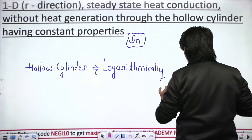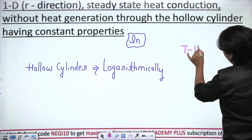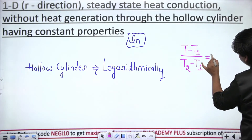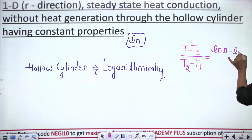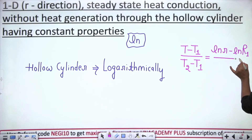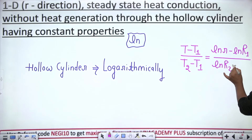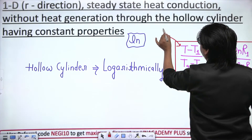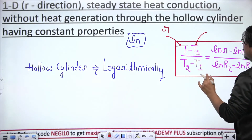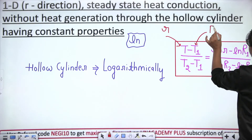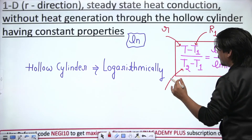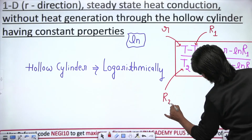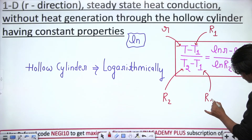The formula is: (T − T1) / (T2 − T1) = [ln(r) − ln(R1)] / [ln(R2) − ln(R1)]. Here, capital T is the temperature at some radial distance small r. T1 is the temperature on the inner surface of the hollow cylinder at radial distance R1. T2 is the temperature on the outer surface at radial distance R2.